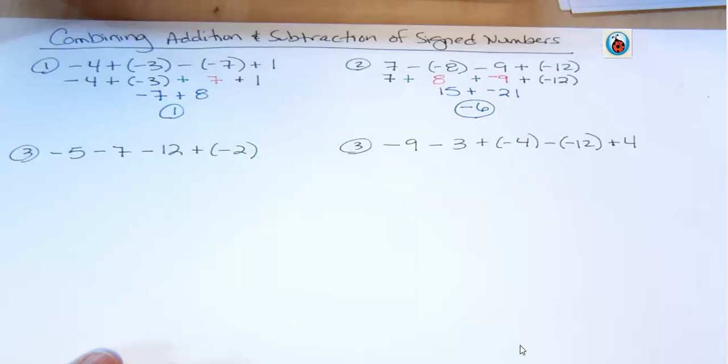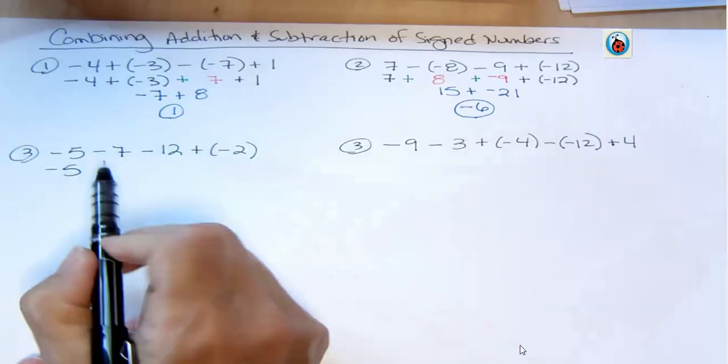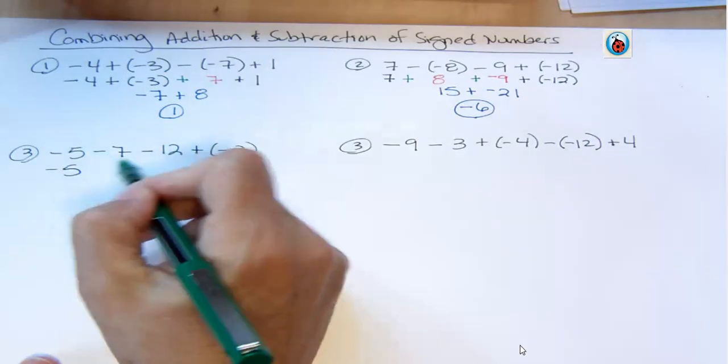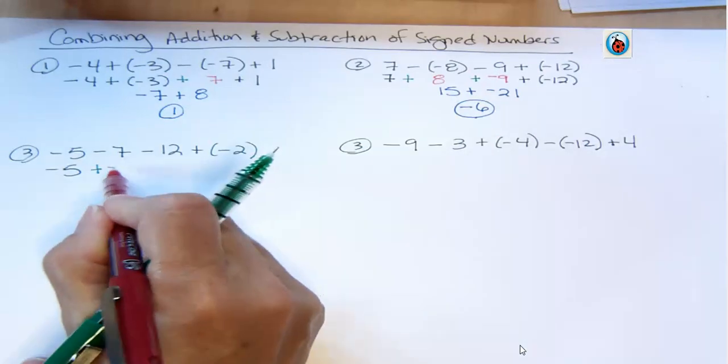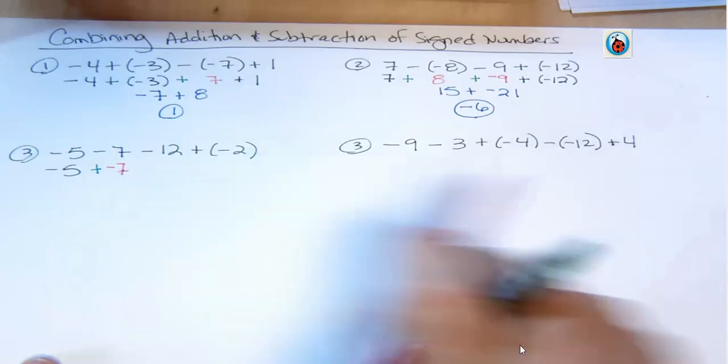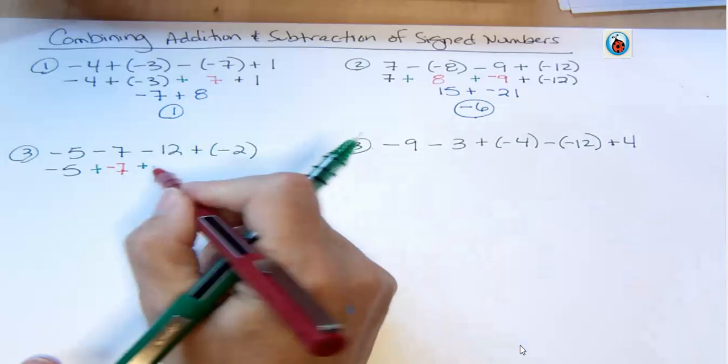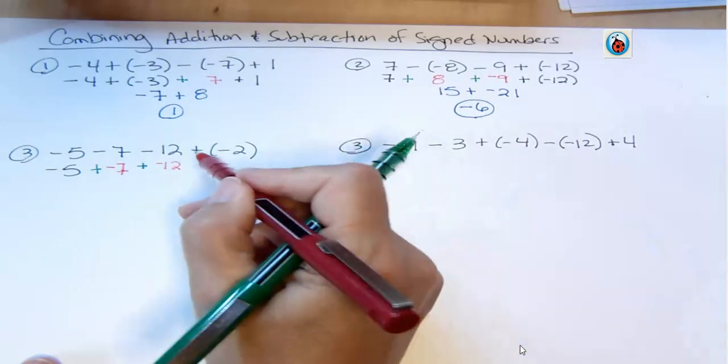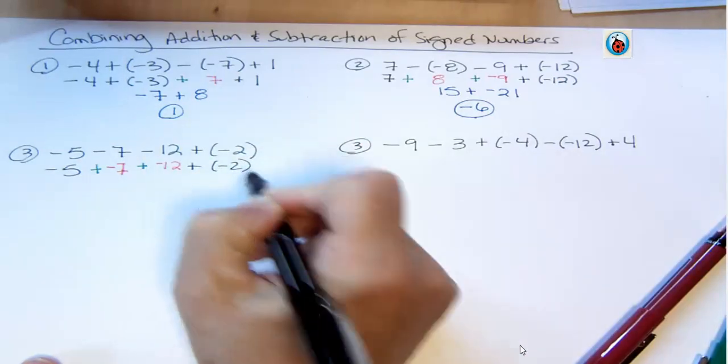Okay. Let's take a look at number 3. The first term never changes. Anything with subtraction, yes, I'm going to change it. So I have a subtraction. I'm going to change to addition. And then I'm going to change that positive 7 to a negative 7. And then I'm going to change that subtraction to addition. That positive 12 becomes negative 12. And then this is an addition already. I don't change anything that was addition, so I'm not changing that.